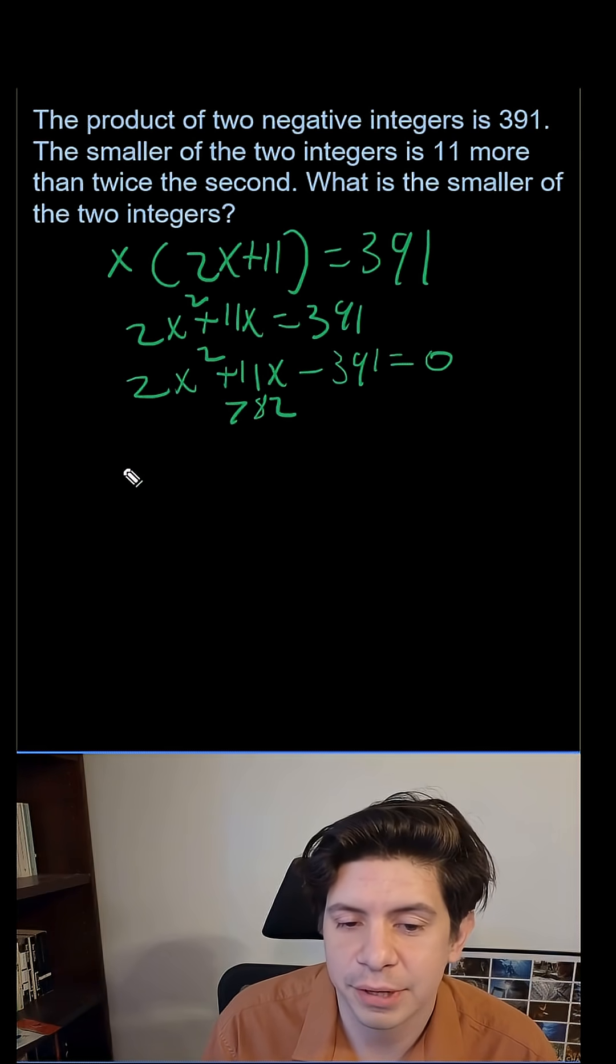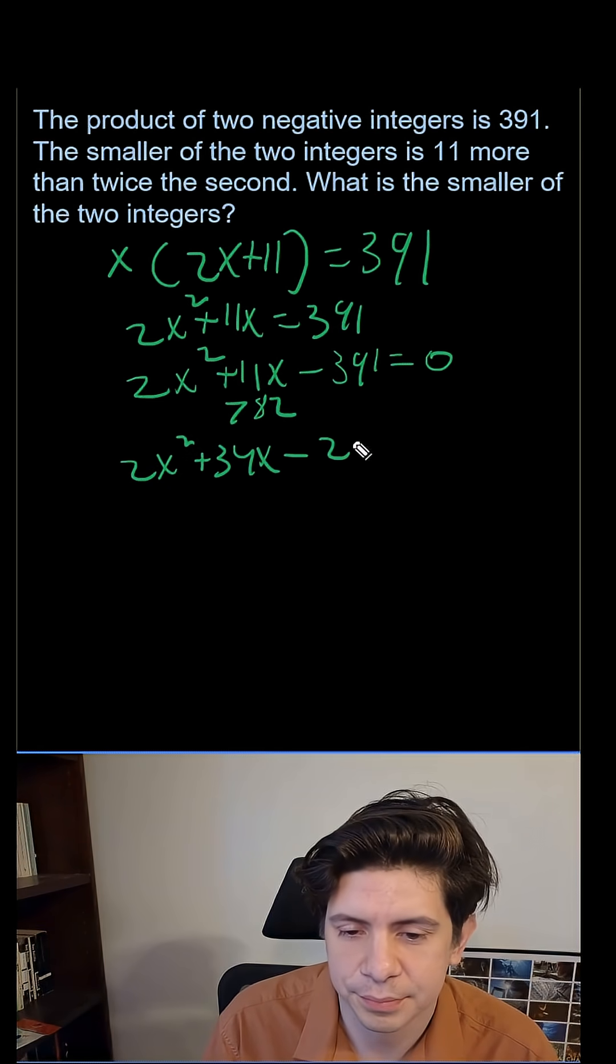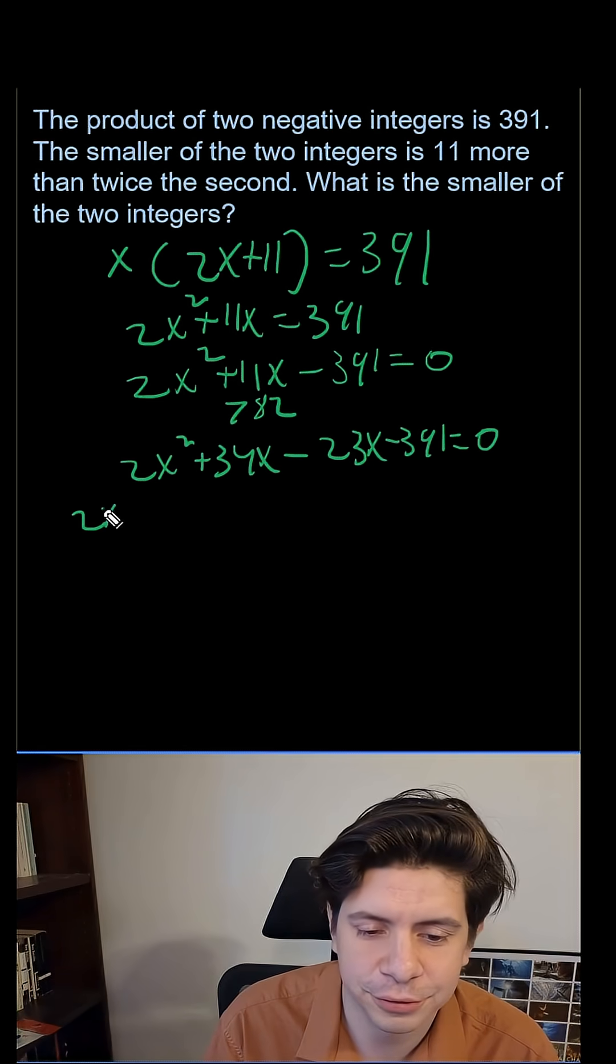It's going to be 23 and 34. So you could do 2x squared plus 34x minus 23x minus 391. This is called the earmuss method sometimes, so we factor it from the first two, 2x,